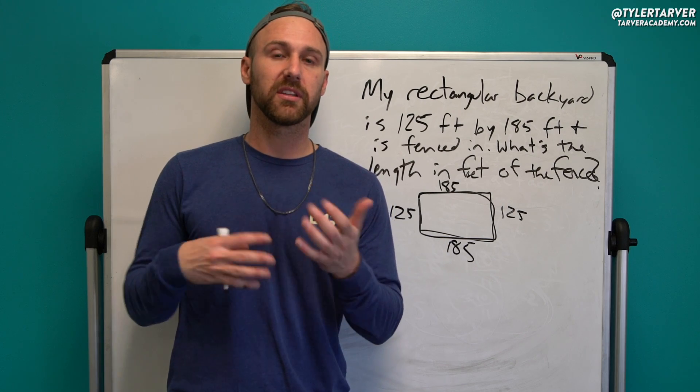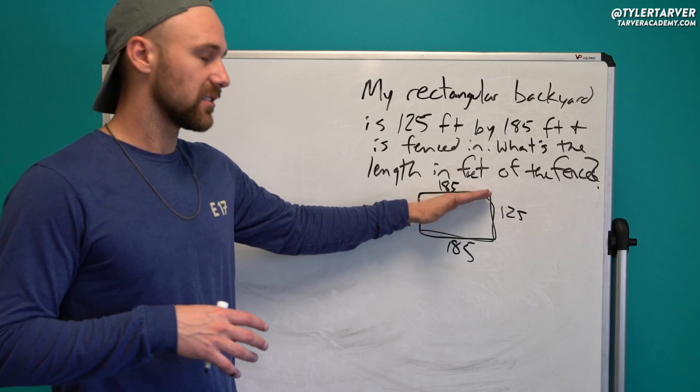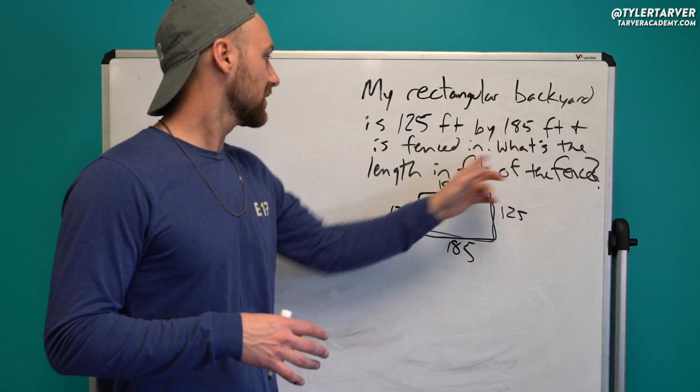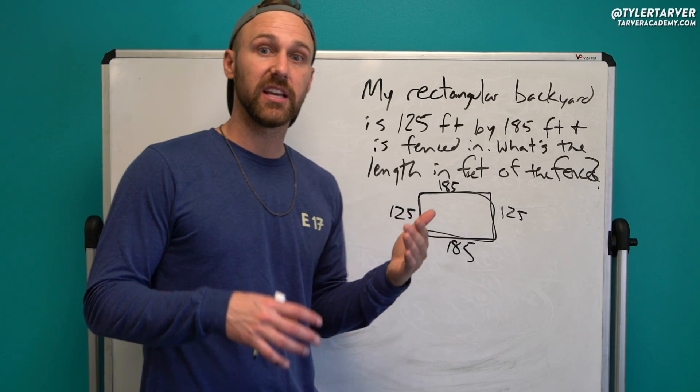Now, do you know what that's called? A lot of people get this mixed up. Area and perimeter, they get confused. Area is all the stuff inside of it. We don't want that. We want what's the length in feet of the fence. We want the actual fence. So that's the perimeter.